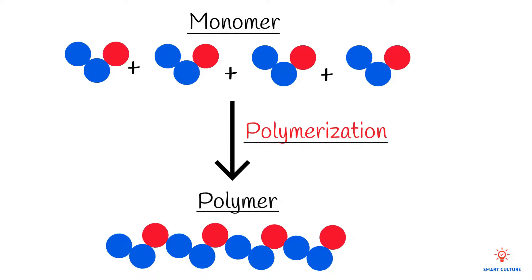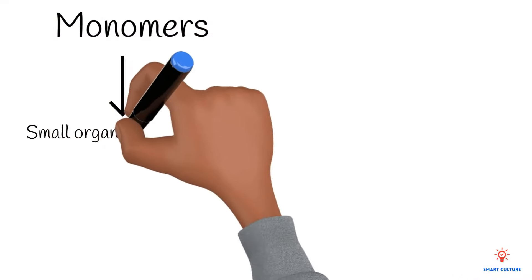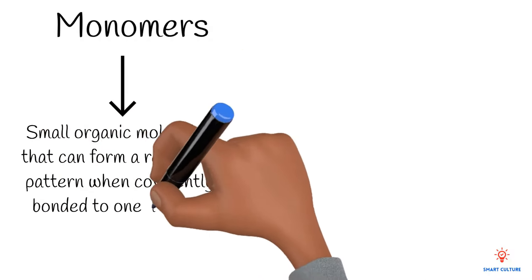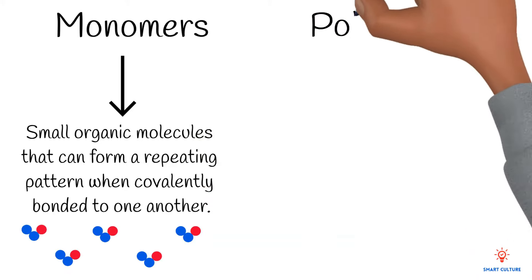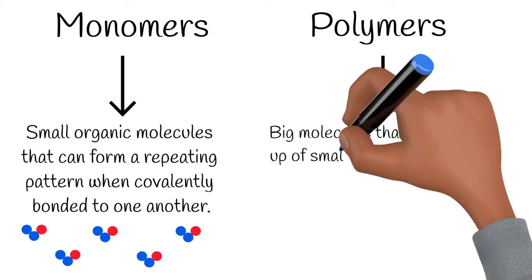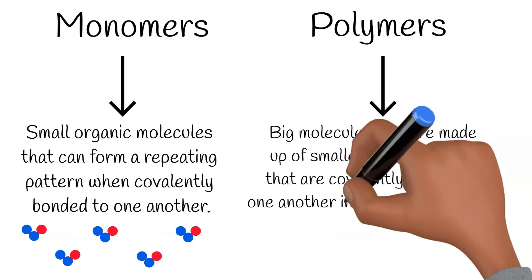Monomers are small organic molecules that can form a repeating pattern when covalently bonded to one another. A polymer is a big molecule made up of smaller monomer units that are covalently bonded to one another in a repeating pattern.